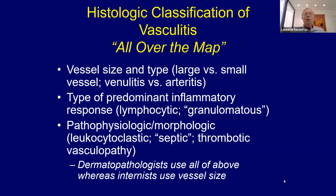When you think about the histologic and clinical classification of vasculitis, it's all over the map. People talk about vessel size — large versus small, venulitis versus arteritis — the type of predominant inflammatory response, whether it's a lymphocytic vasculitis or granulomatous vasculitis. We talk about pathophysiology: leukocytoclastic, septic, thrombotic. There's no one systematized method of dealing with this, so we use all of the above as dermatopathologists.